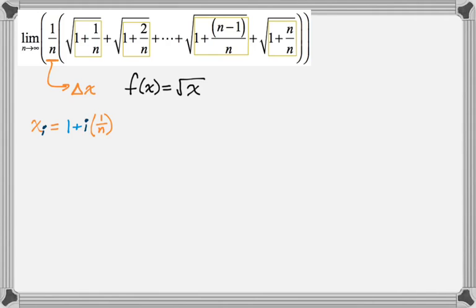And once I know that, I can use that to figure out what a and b are. So a is going to be x sub 0, which is 1 plus 0 times 1 over n, so just 1. And then b is going to be x sub n, which is going to be 1 plus n over n, which is 2. So I can say that the integral is the integral from 1 to 2 of radical x dx.